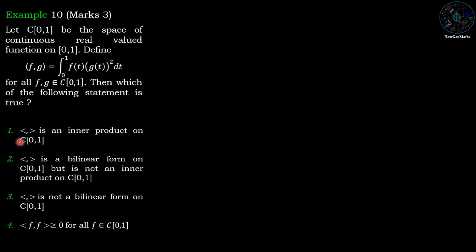We have four statements. The first statement: this product is an inner product on C[0,1]. Second: it is a bilinear form on C[0,1] but not an inner product on C[0,1]. Third: it is not a bilinear form on C[0,1]. And the fourth option: ⟨f,f⟩ ≥ 0 for all f belonging to C[0,1].